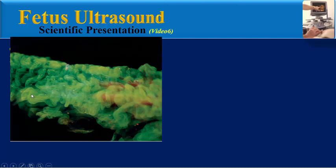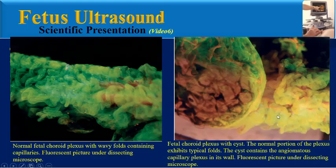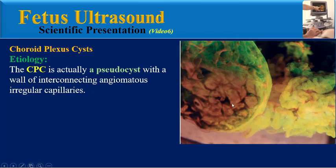This fluorescent microscopic image shows normal fetal choroid plexus with wavy folds containing capillaries. Another fluorescent microscopic image shows a choroid plexus cyst. A normal portion of the plexus exhibits typical folds, but the cyst contains angiomatous capillary plexus in its wall. The choroid plexus cyst is actually a pseudocyst with a wall of interconnecting angiomatous irregular capillaries.